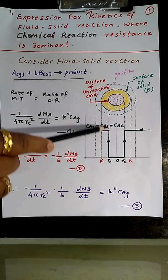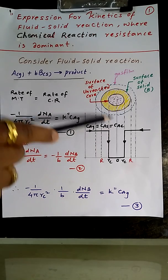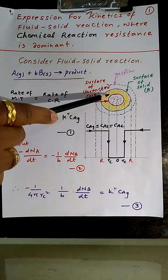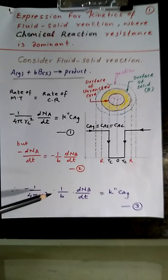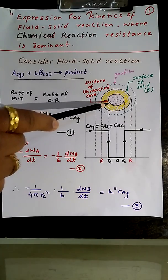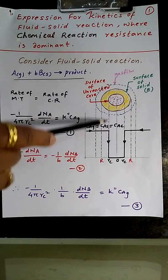Whatever concentration of A which is outside the particle will be coming as it is inside the particle and transmitting as it is over the surface of the core. That is described in this diagram, and as soon as your reactant A comes over the surface it will be consumed.